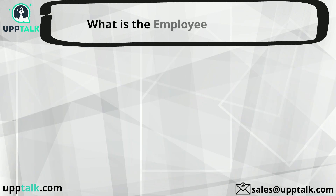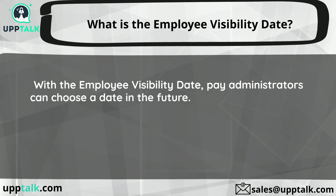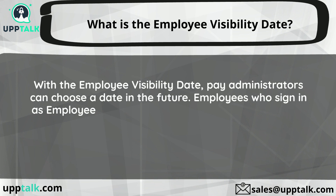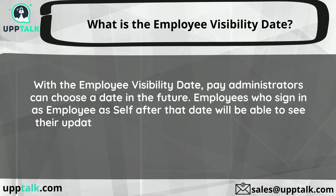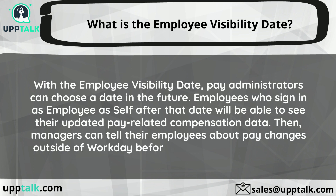What is the employee visibility date? With the employee visibility date, pay administrators can choose a date in the future. Employees who sign in as 'employee as self' after that date will be able to see their updated pay-related compensation data. Managers can then tell their employees about pay changes outside of Workday before the date when the change will be visible.